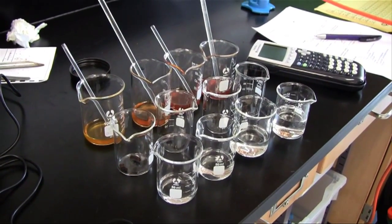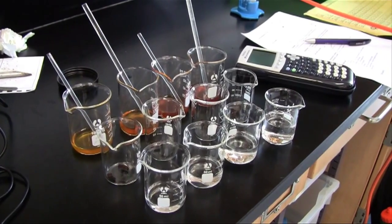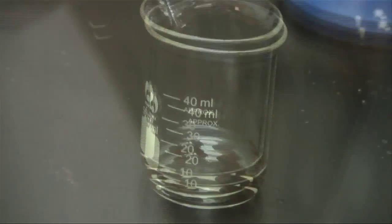The top row has iron 3 chloride, the second row has iron sulfide, the third row has hydrochloric acid.